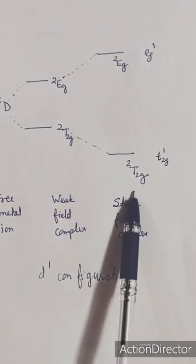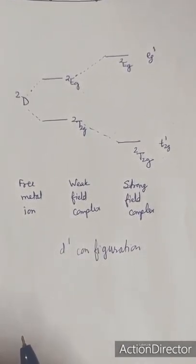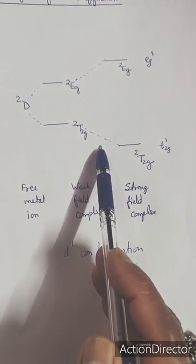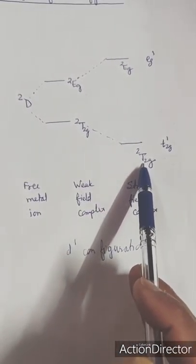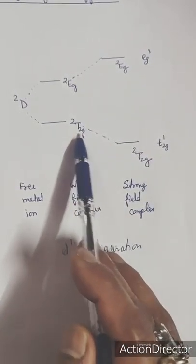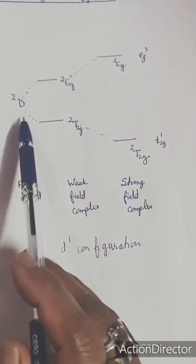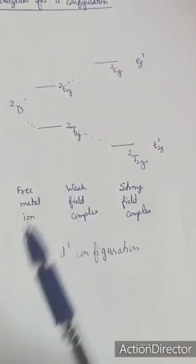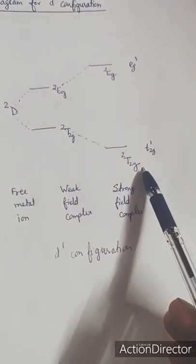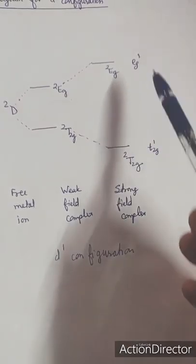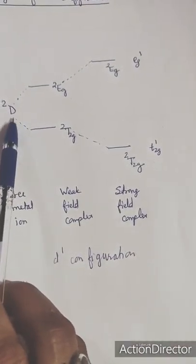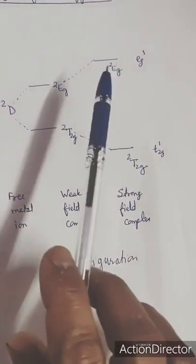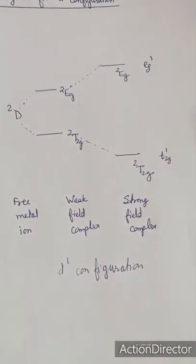The lines joining both extremes represent the energy levels of intermediate field strength — because the left is the weak field complex, the right is the strong field complex, and the middle represents intermediate field complexes. At the extreme left, energy levels of weak field complexes are arranged in increasing order of energy, while at the extreme right, strong field metal ion configurations are arranged.